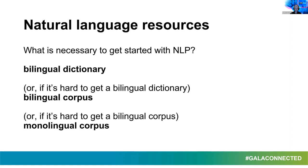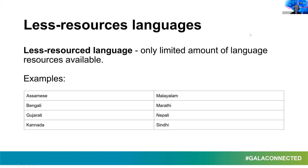We are talking about less-resource languages. A less-resource language is a language for which only a limited amount of language resources is available. The examples I'm giving here are some of the official languages of India, but the list of less-resource languages is actually very broad. There are some European languages on this list also. I'm lucky enough as a Polish speaker that there are some resources available for my language, but I'm aware of languages for which resources are very limited, and people working with these languages cannot possibly use natural language processing or artificial intelligence methods.